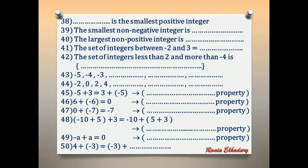Number 38: the smallest positive integer. The positive integers are 1, 2, 3, 4 and so on. The smallest is 1.